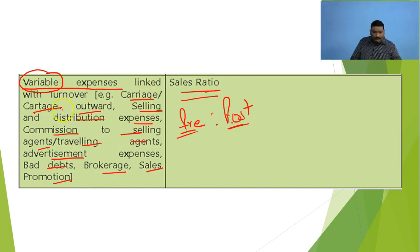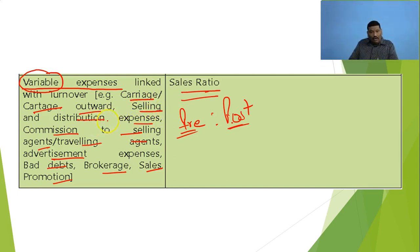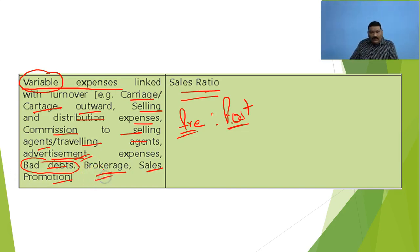You can see one by one — carriage output: as much as you sell the goods, you have to carry them and distribute them to the go-downs of the parties. You have selling and distribution expenses also with the volume of sales. More selling agents means more sales. You have advertisement also for good sales. If you have good sales, you have more debtors, and if you have more debtors, definitely you have more bad debts. And for the selling part you have to pay brokerage also and sales promotion will be there. So these are the variable expense examples, and all these expenses will be distributed in the ratio of pre and post sales ratio.